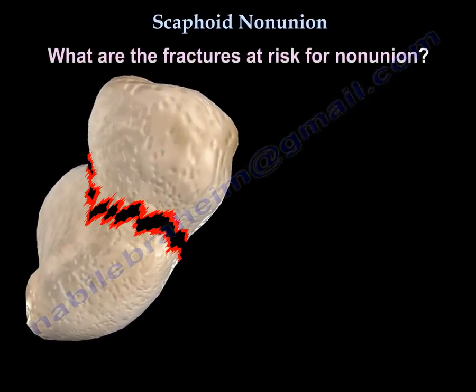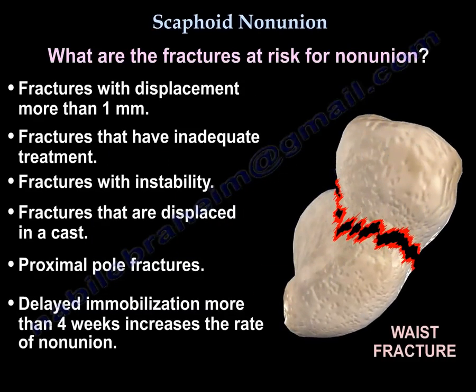What are the fractures at risk for non-union of the scaphoid? Fracture with displacement more than 1 mm, fractures that have inadequate treatment, instability, or fractures that displaced in a cast, proximal pole fractures, and delayed immobilization more than 4 weeks — all have an increased rate of non-union.